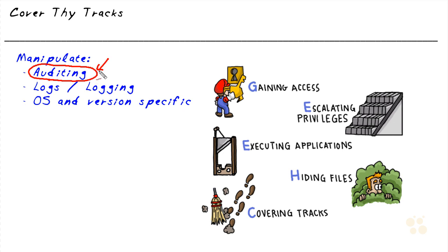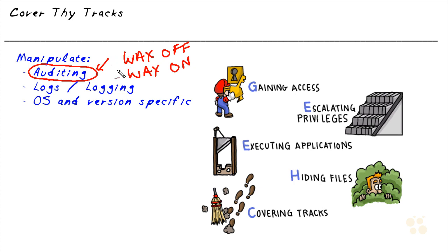At the same time, if they disable auditing and leave it disabled, it's also very likely that somebody may notice that auditing is totally disabled on the system. So it could be like an inverse Mr. Miyagi from Karate Kid — wax off when we first go in, auditing off, and then when we're done, we go ahead and turn auditing back on. The attacker would turn off auditing when going in and turn it back on when leaving.